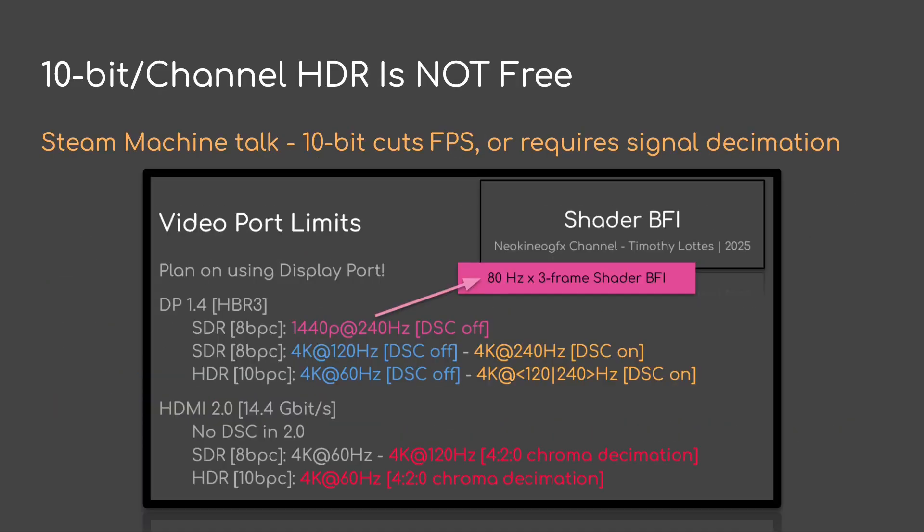Also, 10-bit per channel HDR is not free. For instance, I covered this on my Steam Machine talk. If you run in 10-bit, it's going to cut FPS, or it's going to require signal decimation. For HDMI, it's going to require chroma decimation. And for DisplayPort, it will require turning DSC on — neither of which I want to do.